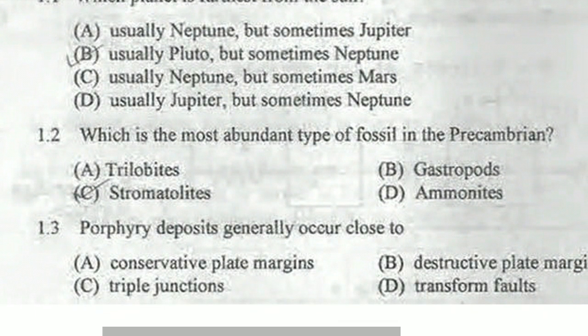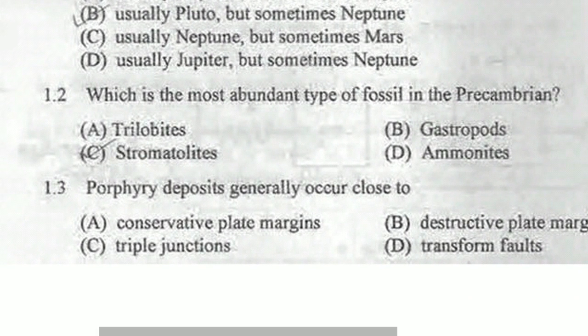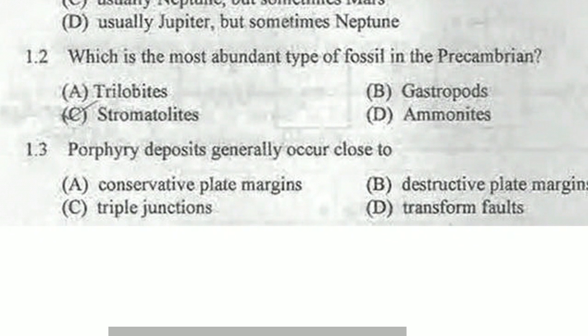Which is the most abundant type of fossil in the Precambrian? In the Precambrian, that is the Proterozoic era. Trilobites are multi-celled organisms — not present then. Gastropods, also not there. Ammonoids are also multi-celled — not present. Because in the Precambrian era there were only stromatolites. Stromatolites are algal structures. So stromatolite is the correct answer.